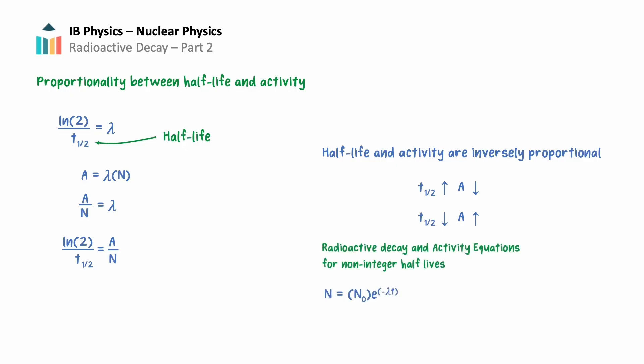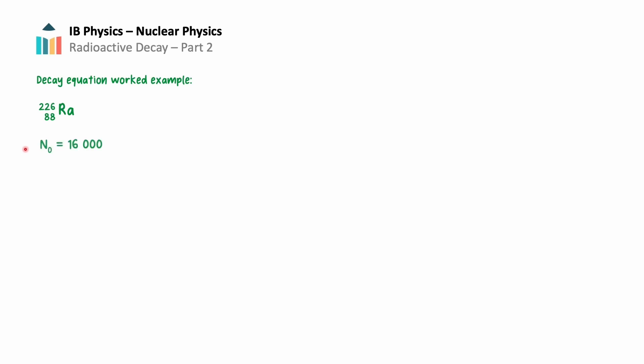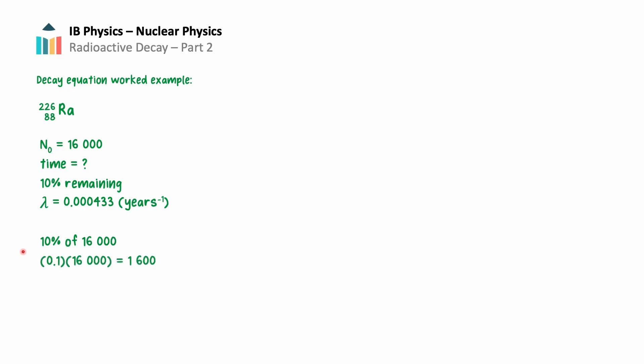Whether working with the decay equation or the activity equation, it is crucial to understand how to solve for the decay constant or time using the natural logarithm. Starting with a sample of radium-226 that contains 16,000 radionuclides, how long would it take until only 10% of the radium remains? We are given radium-226's decay constant of 0.000433 per year. Ten percent of the initial sample, n-sub-0, is 0.1 times 16,000, or 1,600 radionuclides — this will be the final amount n.